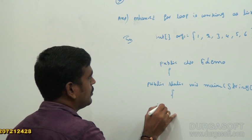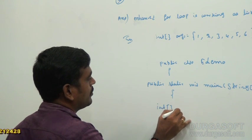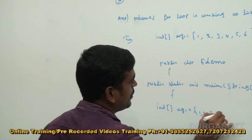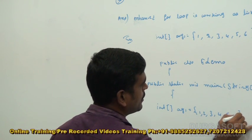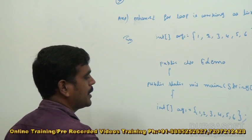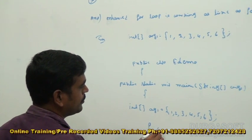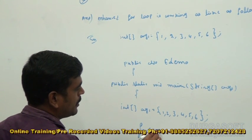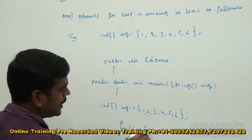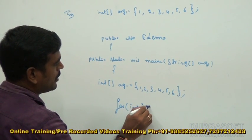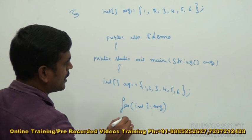void main String args. Now, int arg1 = {3, 4, 5, 6}. The next part here. For int i colon arg1. That's enough.